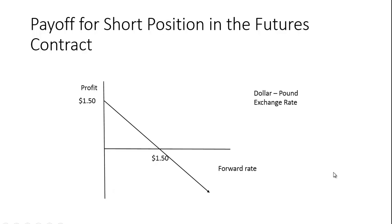The short position is exactly the mirror image. You sold at $1.50, so if the price goes up you lose money — if it went to $1.60, you sold at $1.50 and have to buy back at $1.60, losing $0.10. The most money you can make on this transaction is $1.50, because you sold at $1.50 and if the price goes to zero, you don't have to buy it back — it's all profit.